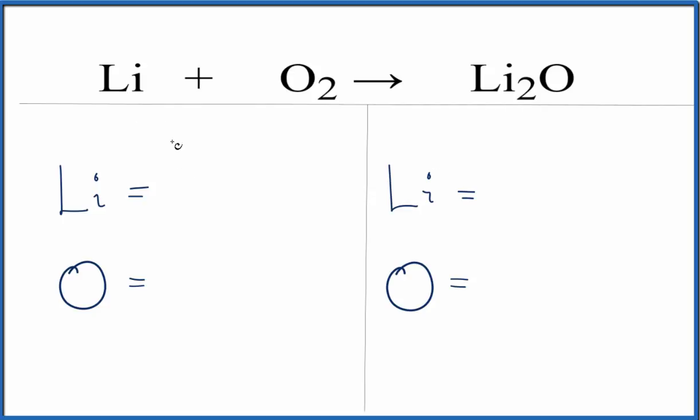So let's count the atoms up. We have one lithium and two oxygens. We have over here on the product side two lithium and one oxygen.